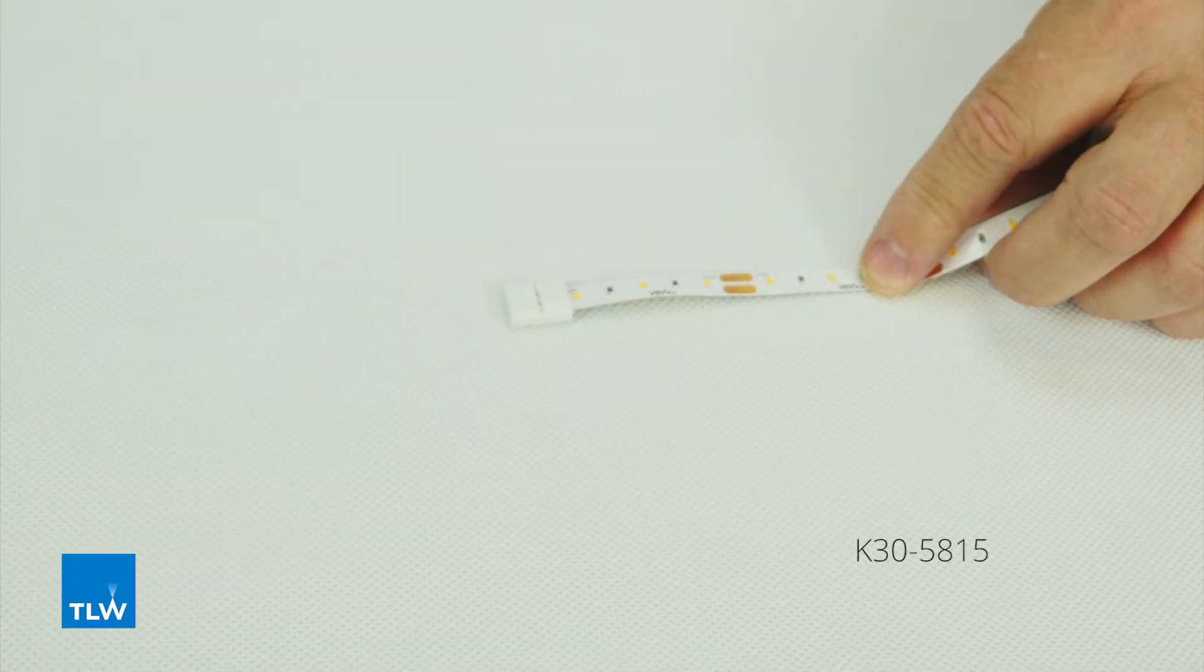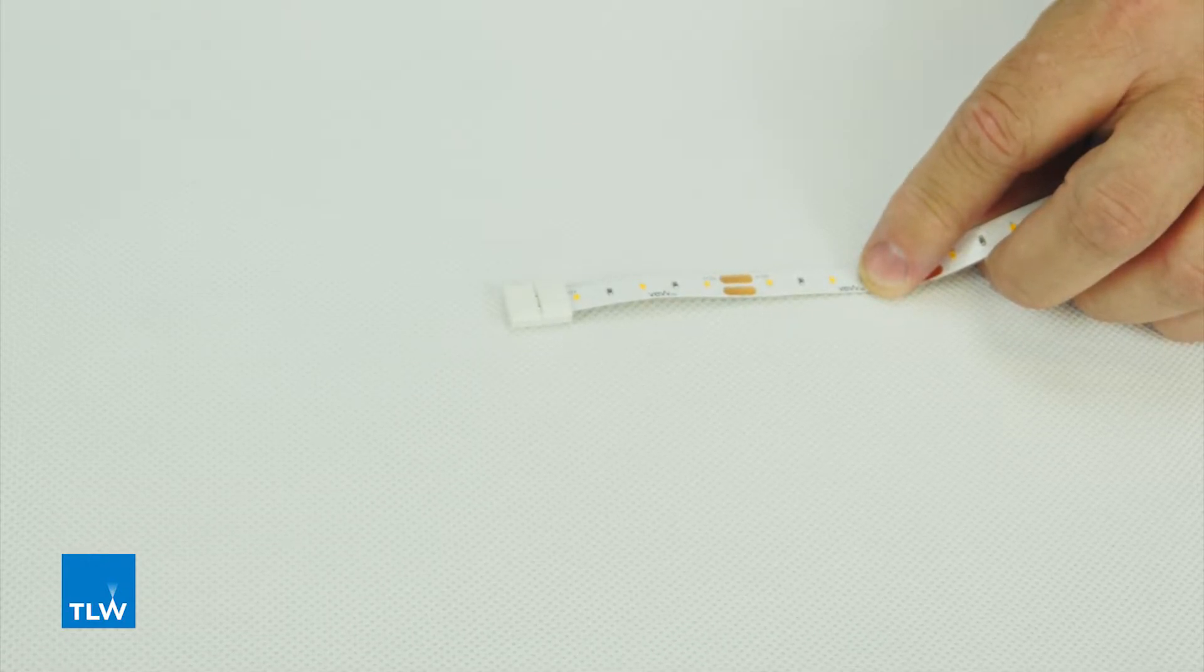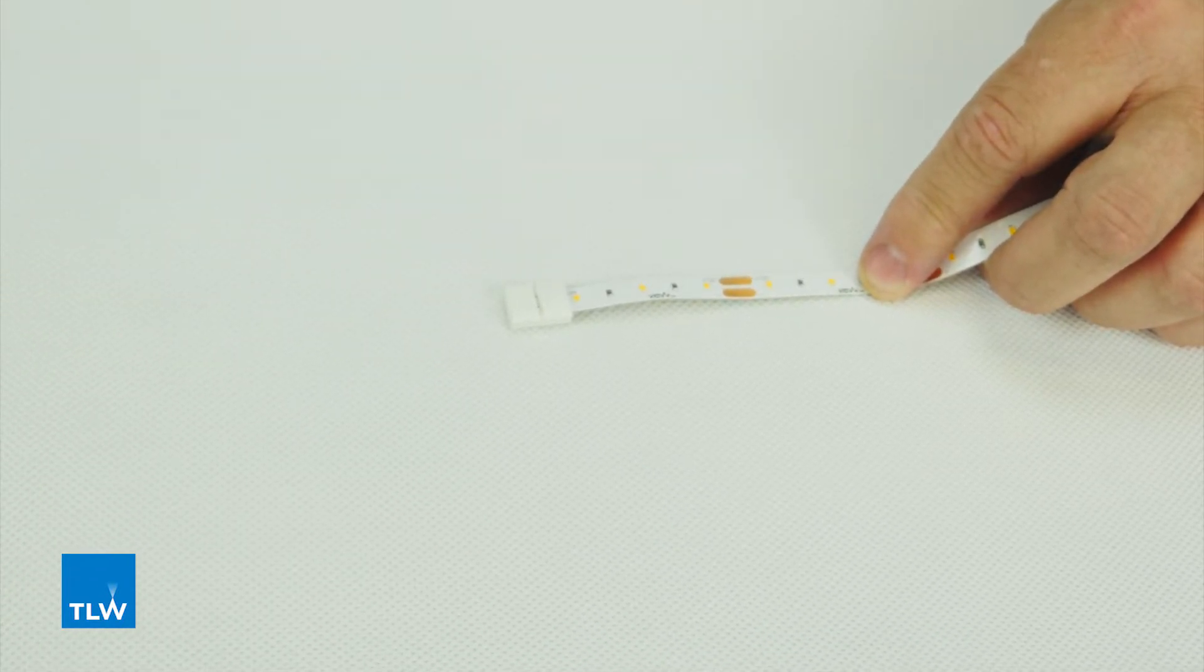This is a K30-5815 buck connector, used when you want to do a straight connection between two separate pieces of tape. You push the tapes into either side into the connectors and push the lid down to connect it all together.